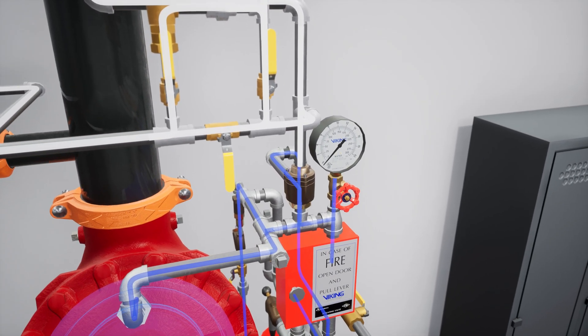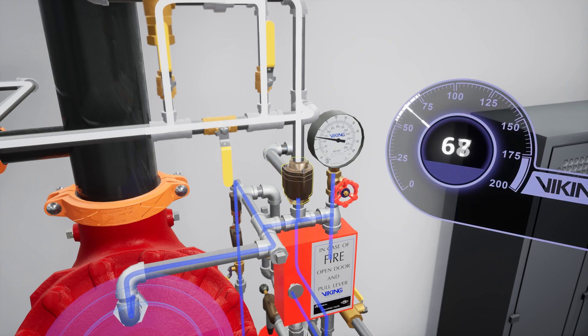After reestablishing air pressure in the release system, the pneumatic actuator will reset and allow water pressure in the prime chamber to build. Check to make sure water pressure is building in the prime chamber.